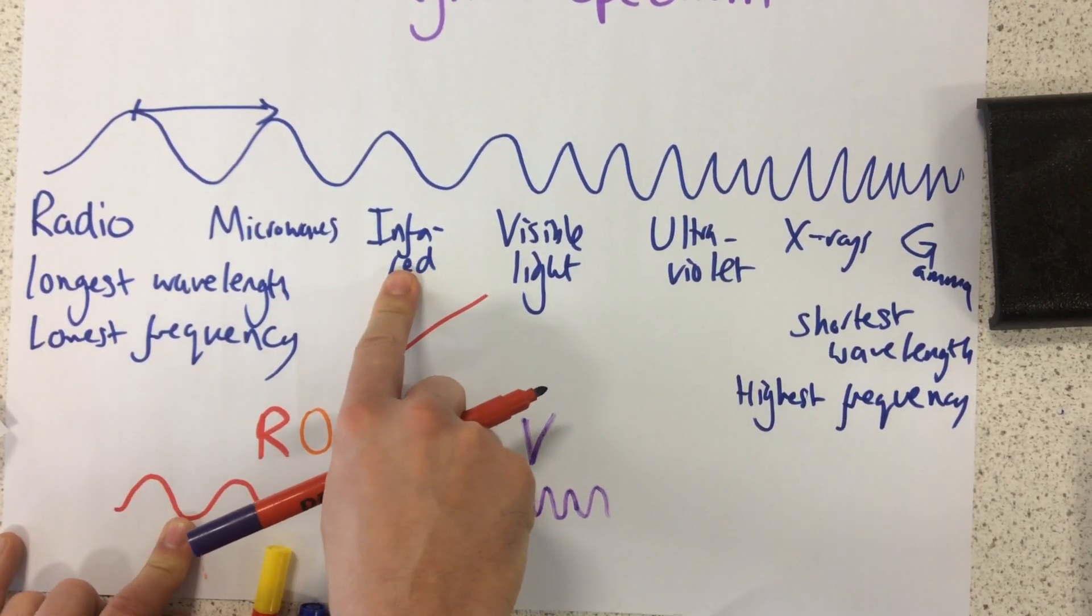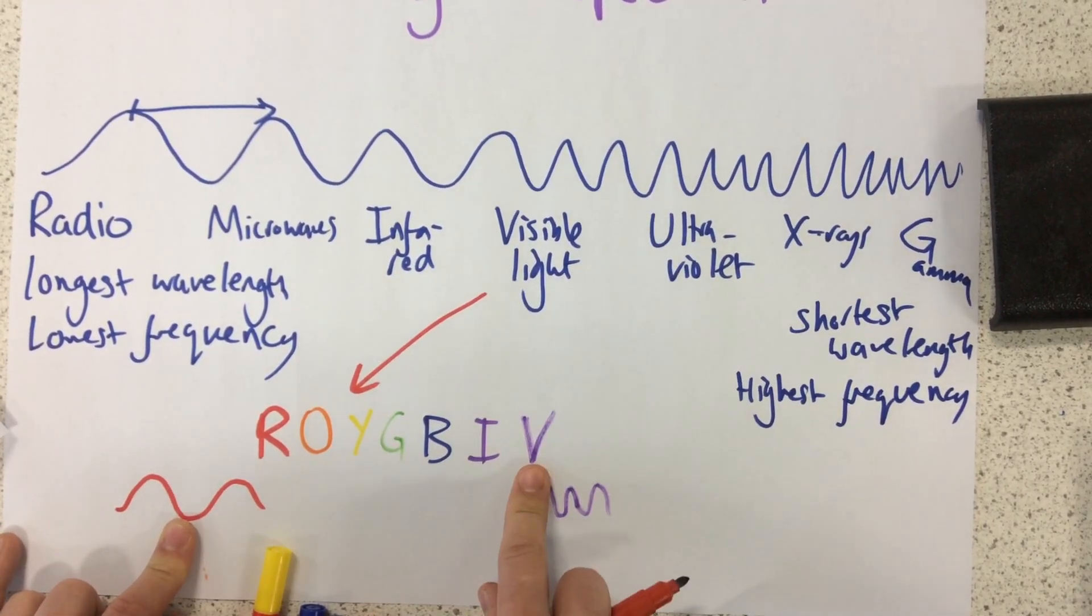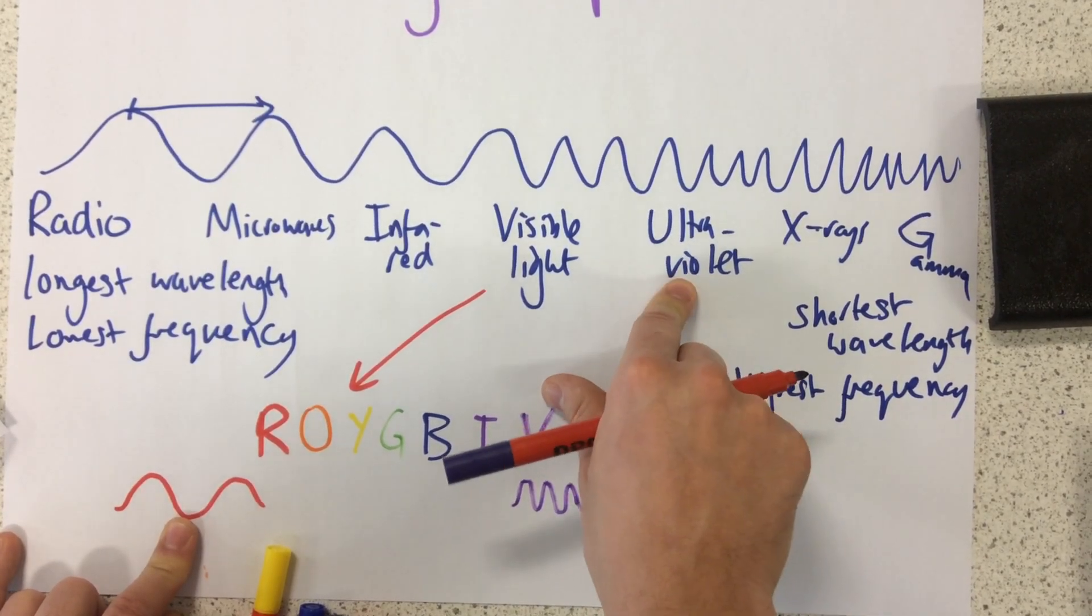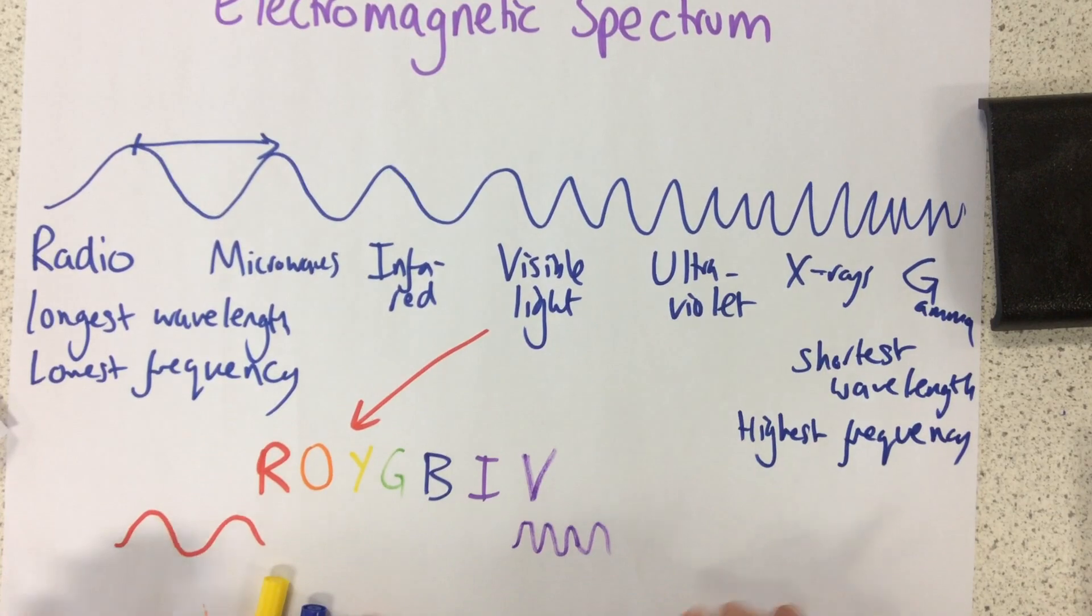Similarly, if we have a slightly higher frequency than violet, we can no longer see it, but that wave is still there. It's called ultraviolet.